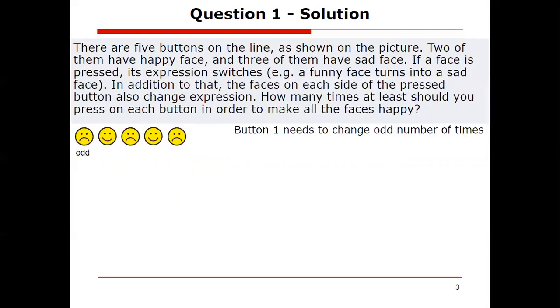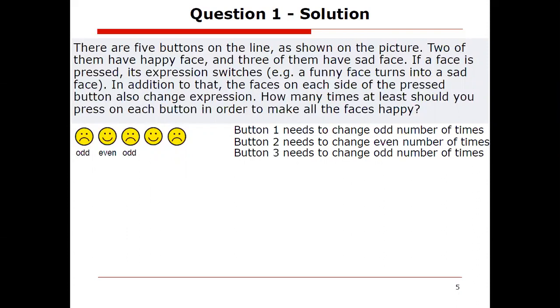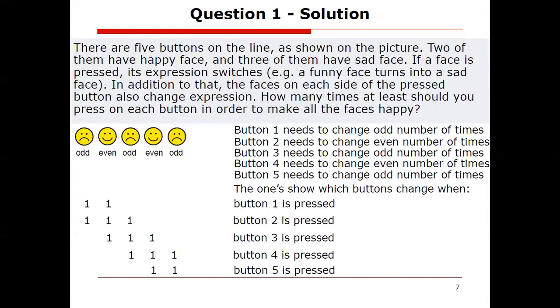Button one needs to change an odd number of times. If we press it once or three times or five times, then it will turn happy at the end. Notice that I wrote needs to change and not needs to be pressed because we can accomplish the change even by pressing the button that's next to it. Similarly, button two will need to change an even number of times. Three, the middle one, will need to change an odd number of times to turn happy. Four from the left will have to change an even number of times because it's happy already. And five will need to change odd.